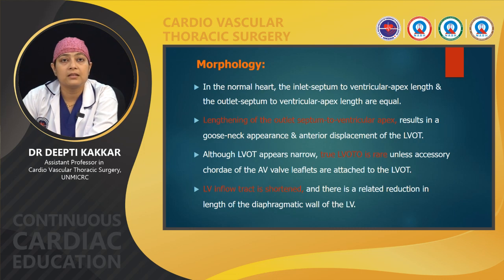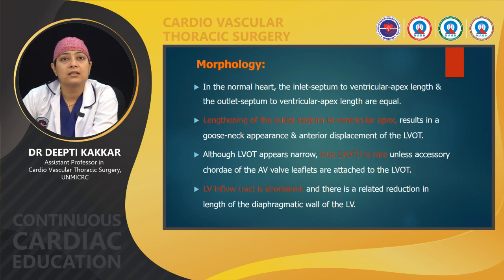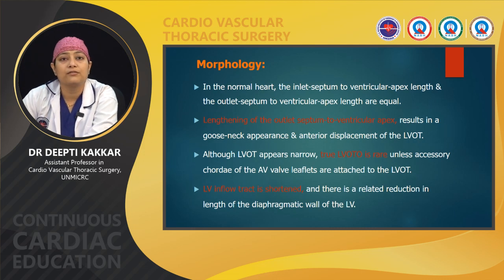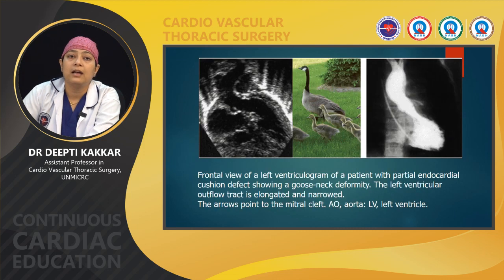This is the echo image and this is the cineangiogram image of the gooseneck deformity, showing the elongated and narrowed LV outflow tract.